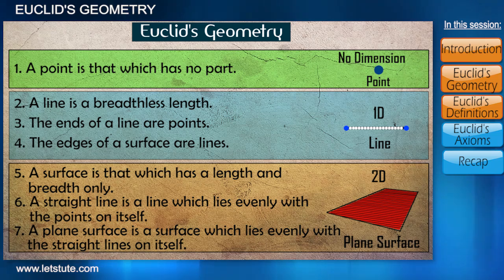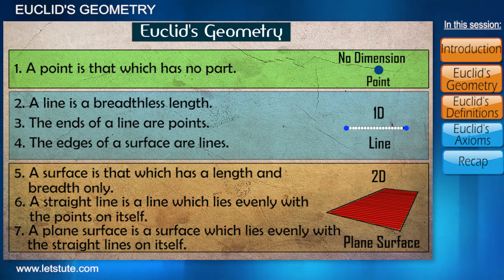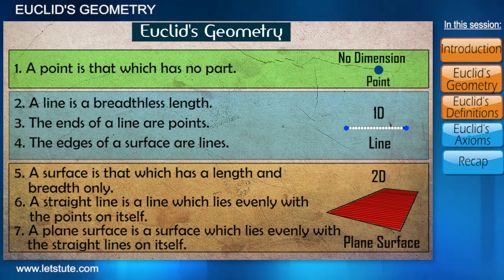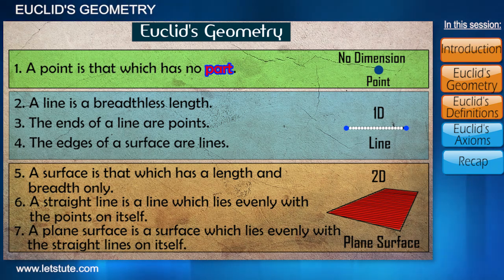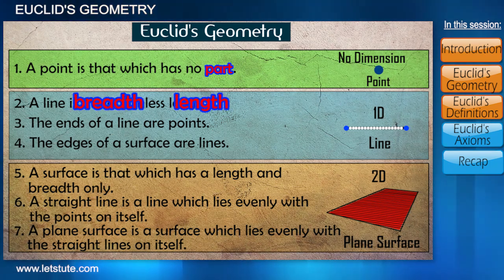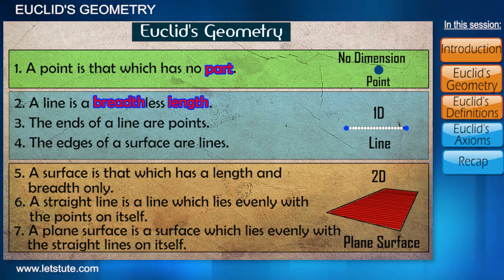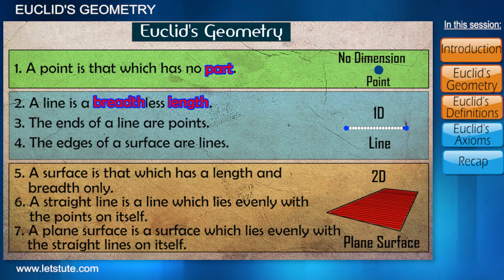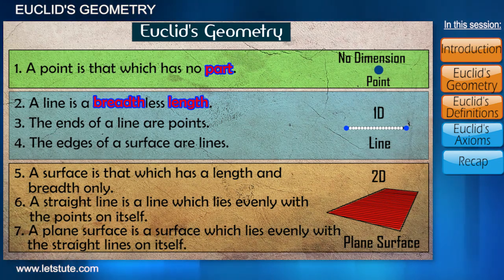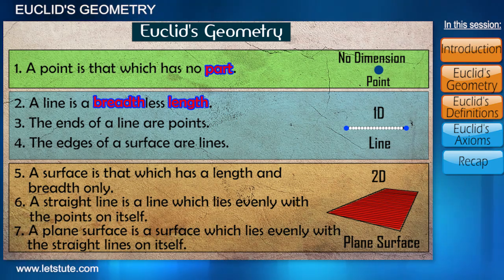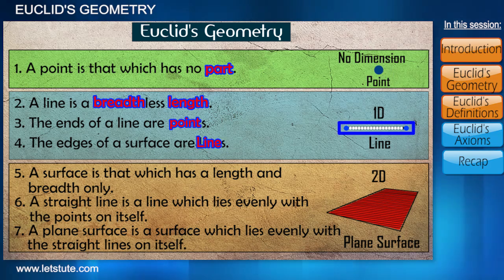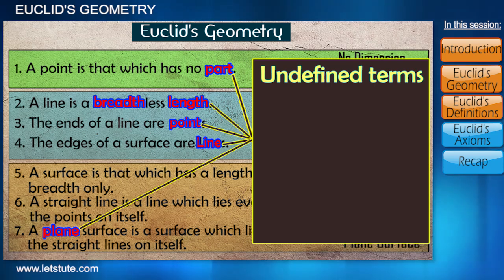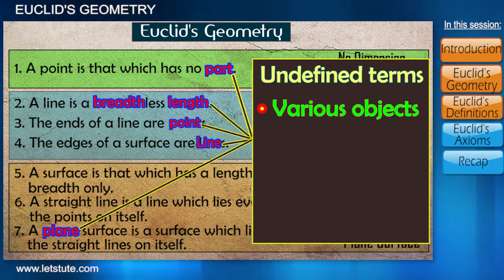Even though everything looks simple, certain terms in the definitions need further explanation. For instance, the first definition uses the word 'part' — but exactly what part are we talking about? The second definition uses 'breadth' and 'length' — again, we would need definitions for these terms. If we continue this process of defining terms, we may never be able to stop. So mathematicians decided to leave certain terms undefined. The terms like point, line and plane are undefined terms in geometry. We can represent these things intuitively or explain them with various objects or physical models.